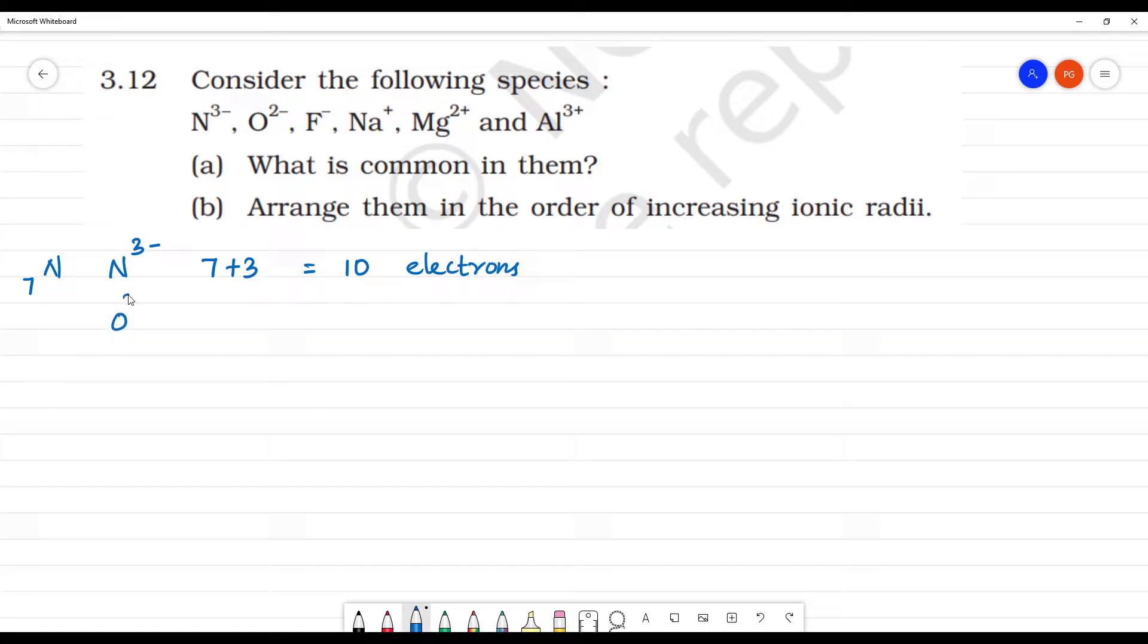Next, O²⁻. Oxygen is atomic number 8. So 8 plus 2 electrons are added. That equals 10 electrons.